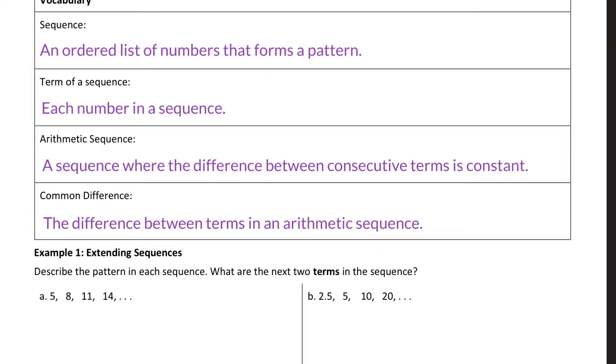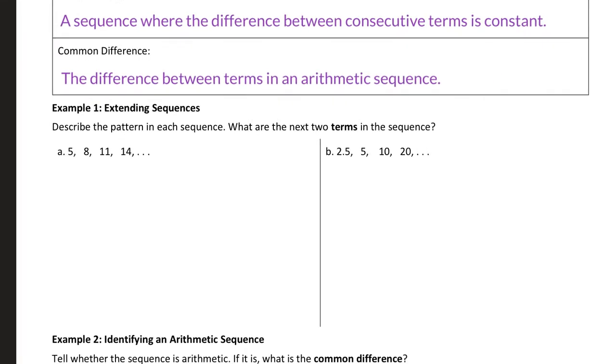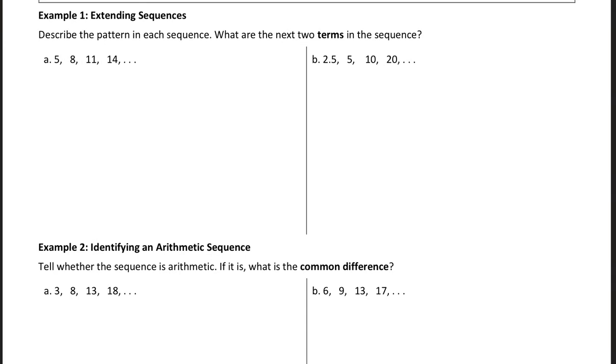So for example one, we're going to talk about extending a sequence. So a sequence is an ordered list of numbers that forms a pattern. So in example one, basically all I'm going to ask you to do to describe this pattern for part A, is to just say what's happening between each term. So, to go from 5 to 8, 8 to 11, 11 to 14, you are adding 3. So I would just say, add 3 to get the next term. That's the first thing I ask. The second thing I ask, what are the next two terms? So the next term in this sequence would then be 17, the term after that would be 20, if I'm adding 3 to get the next term.